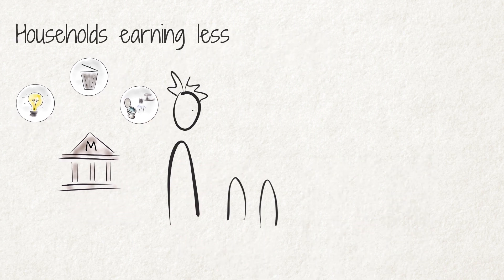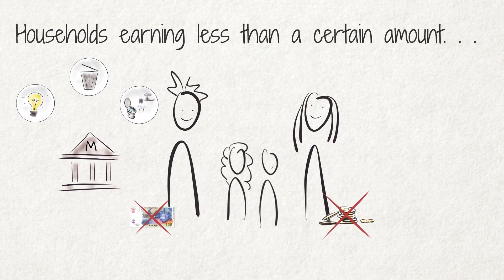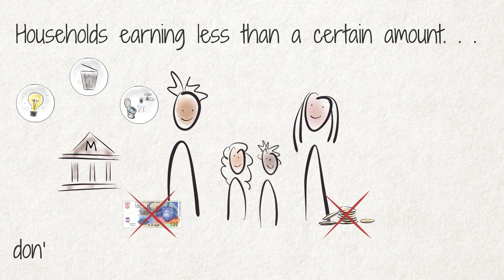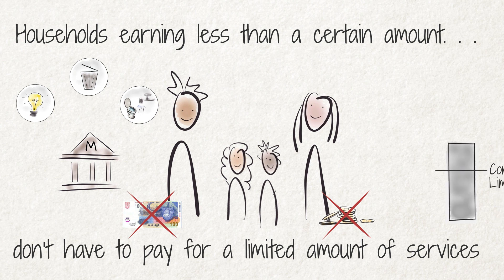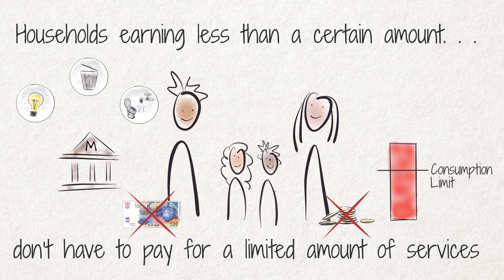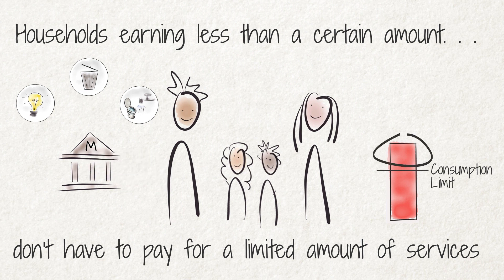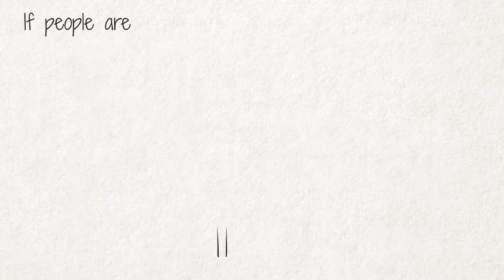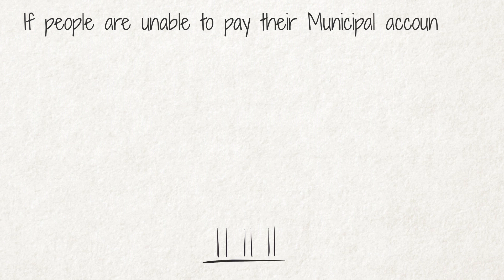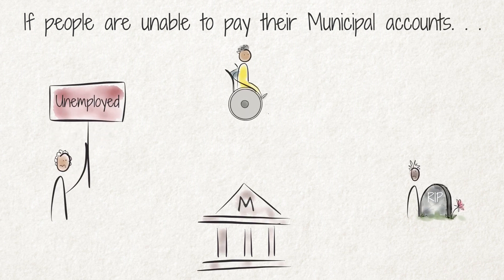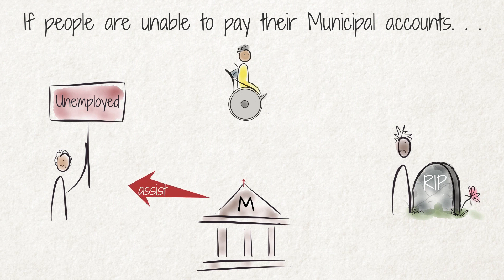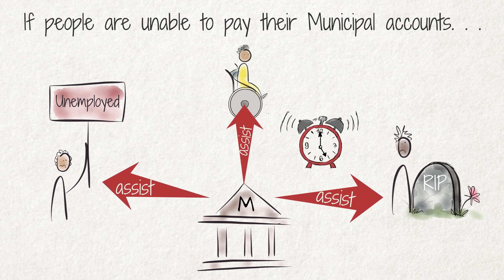Households earning less than a certain amount, determined by the municipality, don't have to pay for a limited amount of municipal services. However, when consumption limits are exceeded, people have to pay for the extra consumption. If people are unable to pay their municipal accounts due to loss of employment, illness or death in the family, the municipality can assist by granting more time to pay or by reducing the debt.